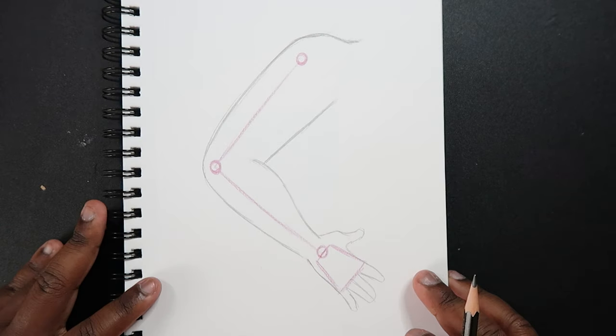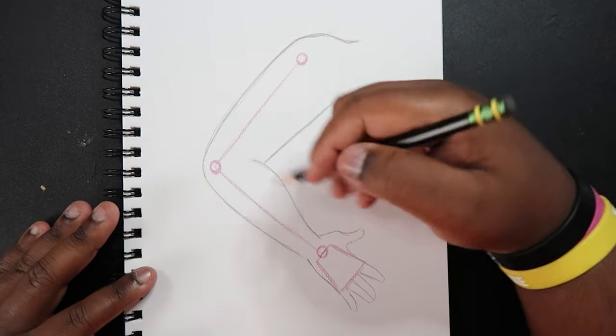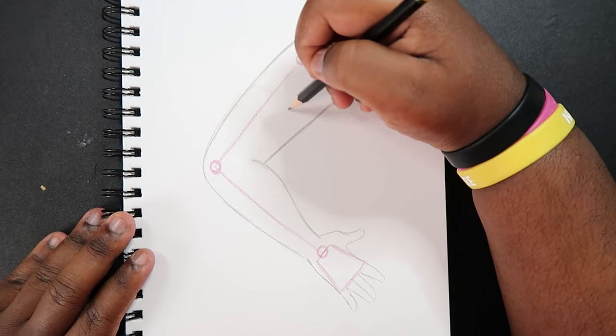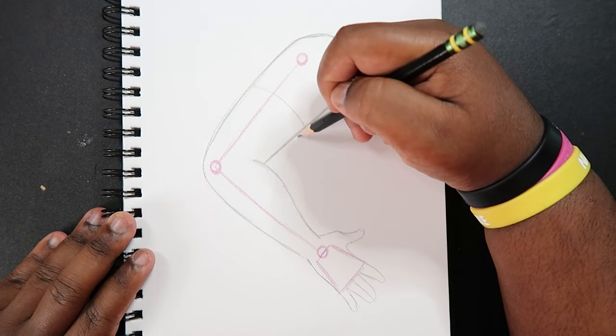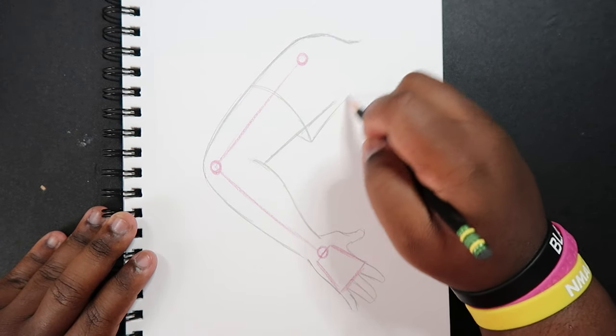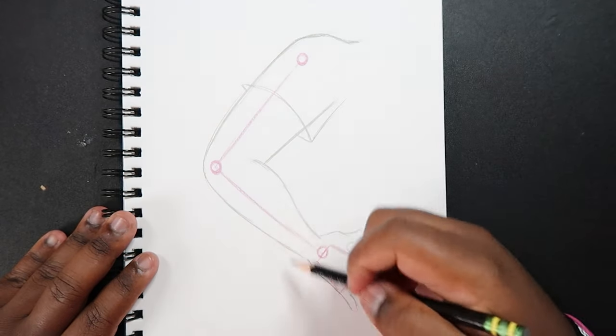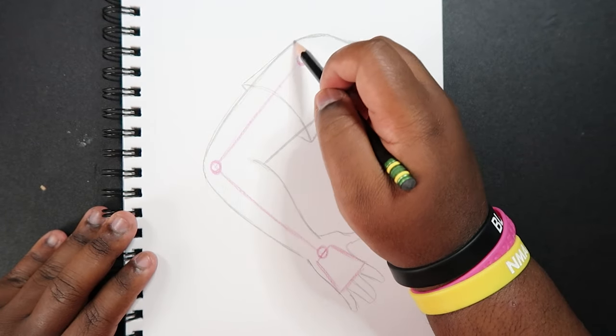Just like that. And if at any point something still seems off, just go back and fix it like I did up here. What you can also do is add a shirt to this arm. That's something you don't have to do, but it's optional to you guys.